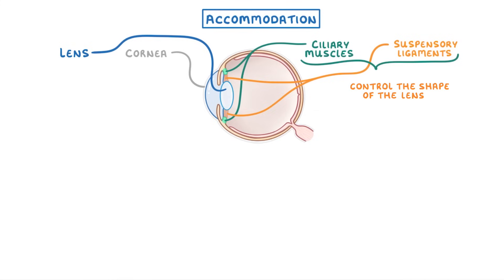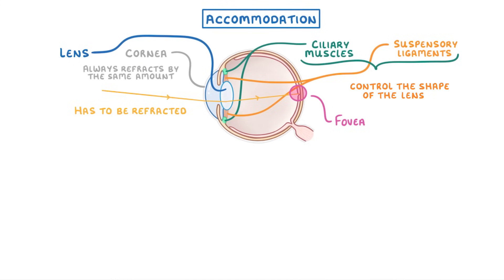Whenever light from an object hits the eye, it somehow has to be focused onto this spot of the retina, called the fovea. And to do this, it has to be refracted so that it changes direction. This is mainly achieved by the cornea, which always refracts light by the same amount.